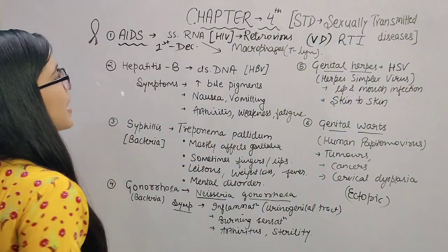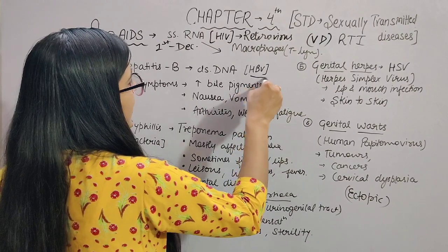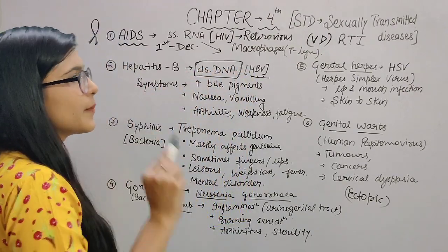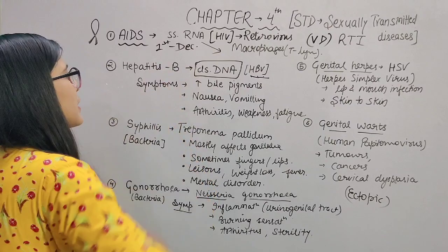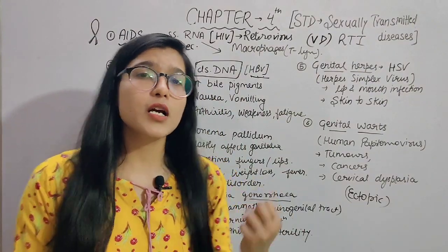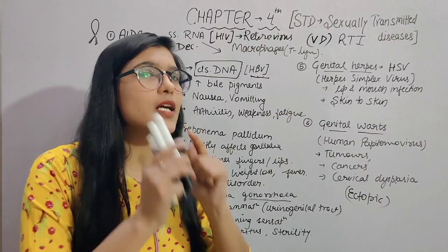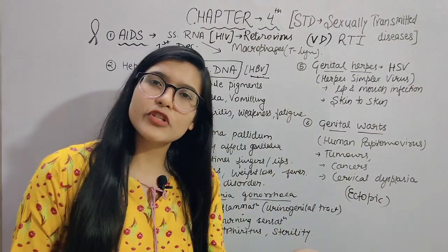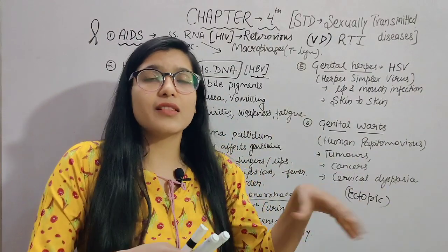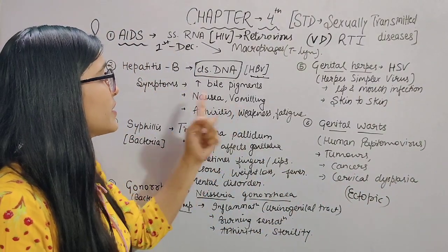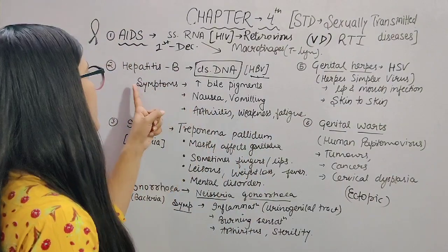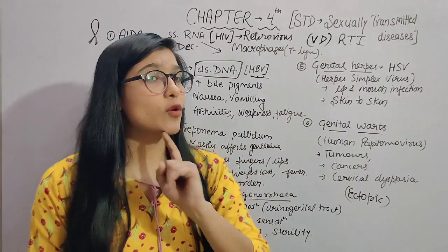The next STD is Hepatitis B. The Hepatitis B virus has double-stranded DNA. When it attacks an individual's body, symptoms include increased concentration of bilirubin causing liver dysfunction, dark-colored stool, nausea, vomiting, headache, weakening of bones, joint pain, and weakness and fatigue. Hepatitis B, as already mentioned, cannot be completely cured.